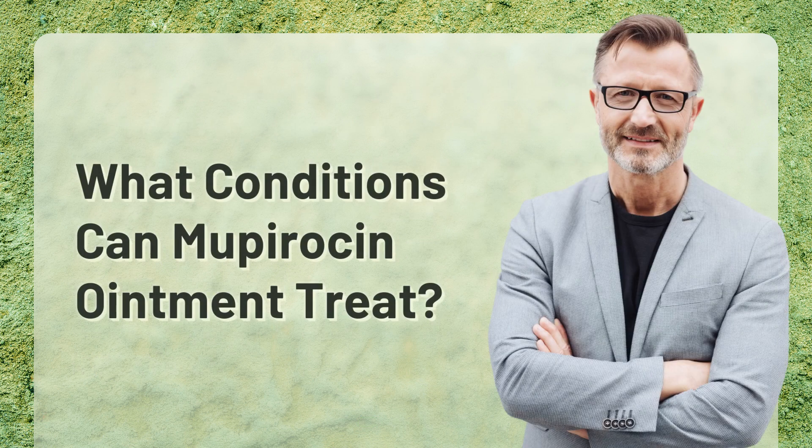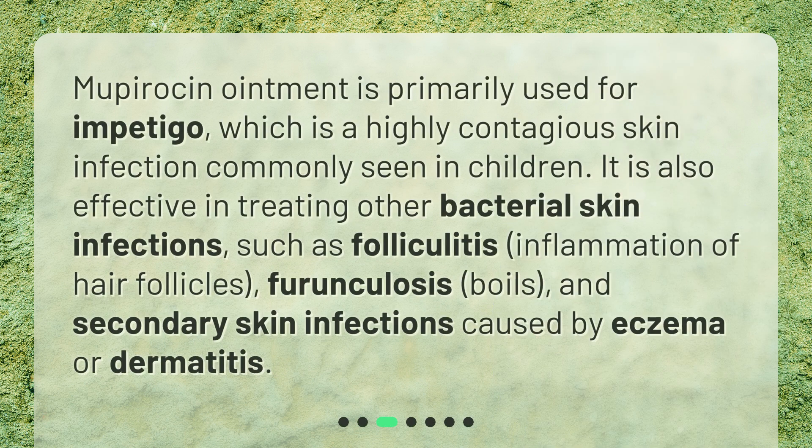What conditions can Mupirocin ointment treat? Mupirocin ointment is primarily used for impetigo, which is a highly contagious skin infection commonly seen in children. It is also effective in treating other bacterial skin infections, such as folliculitis — inflammation of hair follicles — furunculosis, boils, and secondary skin infections caused by eczema or dermatitis.